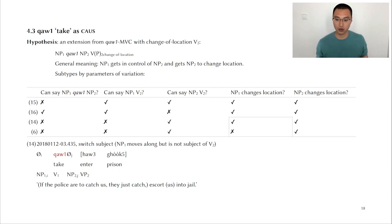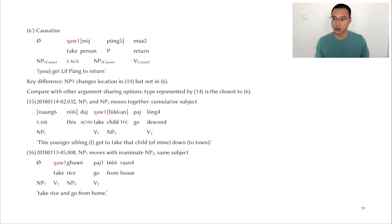And if we lay out the types found in the text, we can see that one of these types only differs from our causative example, illustrated by number six, by one feature. And that feature is whether NP1 changes location together with NP2. The 14th is something that can be called switch subject. And here's an example. If the police already catch us, they just catch and they escort us into jail. So the police moves along with us, but is not the subject of in prison. And this is a reminder of example six, you get us to move, but you don't move together. So if we compare with the other argument sharing options, we can see that 14th and 6th are the closest. 15th is a different type, this younger sibling gotta take that child of mine down to town. So they move together. And 16th, take rice and go from home. So I get rice and go. So the rice moves with me, but rice is not a subject of go from home. It's merely a theme that moves along with me.